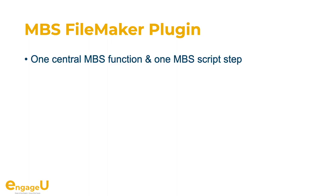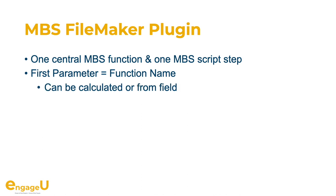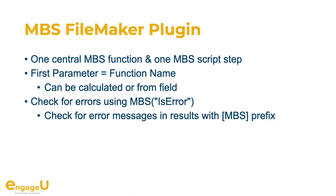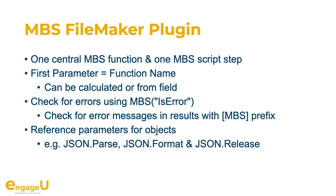The MBS plugin doesn't add 7000 functions directly to FileMaker because that would make it very slow. So we define one central MBS function and one MBS script step. The first parameter is the function name, and this can come from a calculation or from a field if needed. Please watch out for errors and use our MBSIsError function to check the error state for the current thread. You can also look for MBS prefixes on error messages returned by the plugin. A lot of things use reference parameters for objects — for example, a JSONPath function gives you back a JSON object reference number, which you pass to the format function and later to the release function.